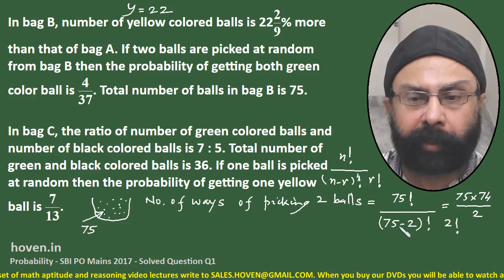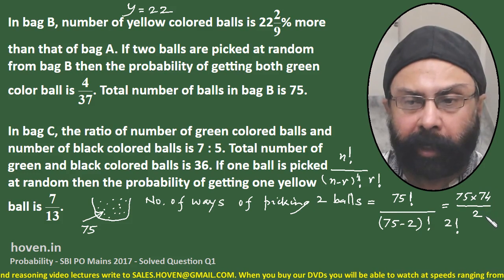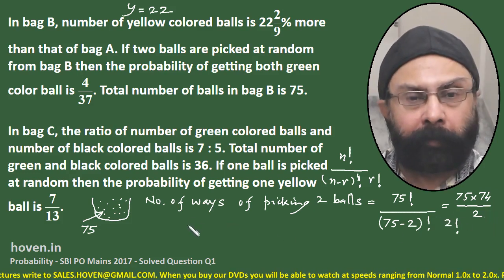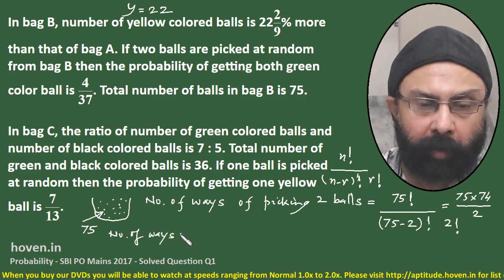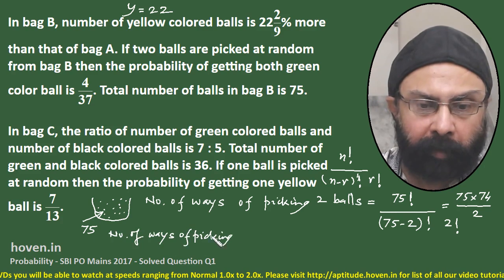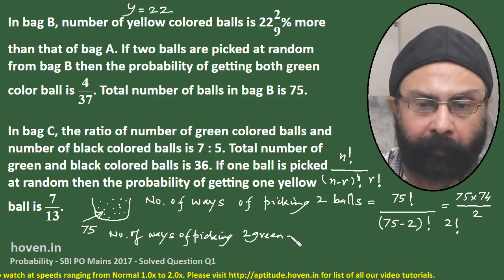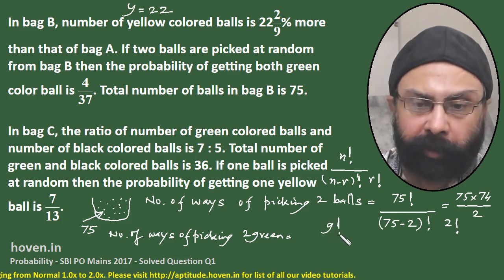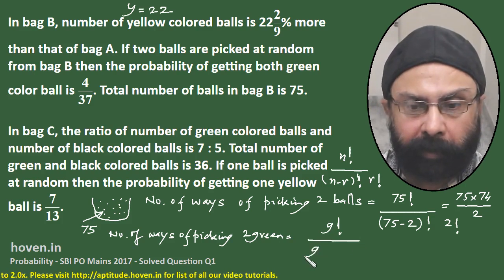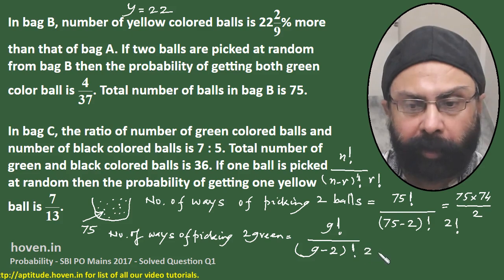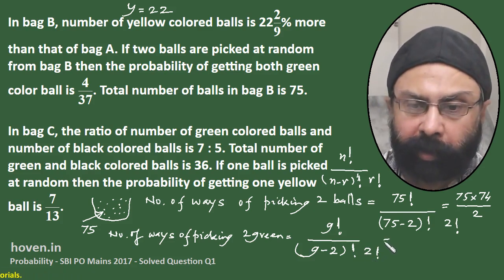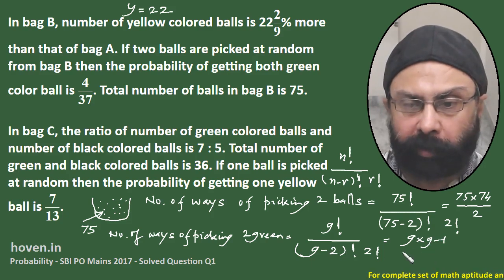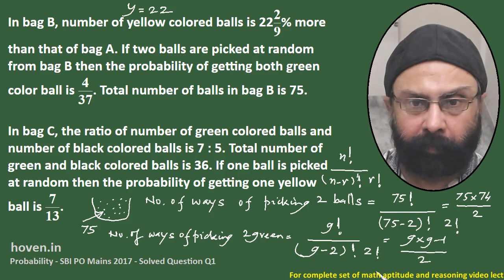Now for picking two green balls: if g is the number of green balls, the number of ways = g! / [(g−2)! × 2!] = g(g−1)/2. The green balls can only be picked from the green balls. So that gives us g(g−1)/2 ways of picking two green balls.